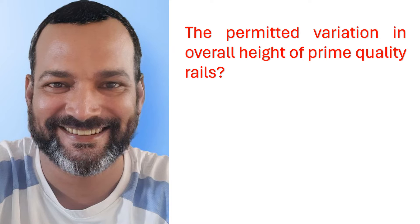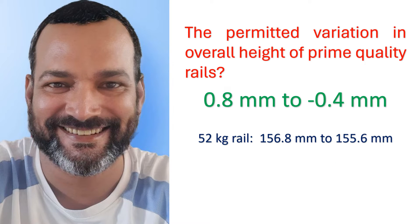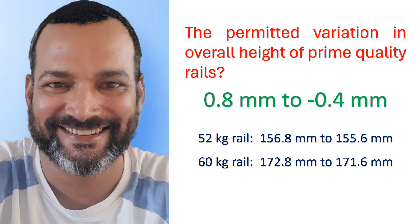The permitted variation in overall height of prime quality rails is +0.8 millimeter to -0.4 millimeter. For example, for the 52 kg rail the range will be 156.8 mm to 155.6 mm, and for 60 kg rails it will be 172.8 mm to 171.6 mm, as the overall height of 52 kg rail is 156 mm and for the 60 kg rail it is 172 mm.